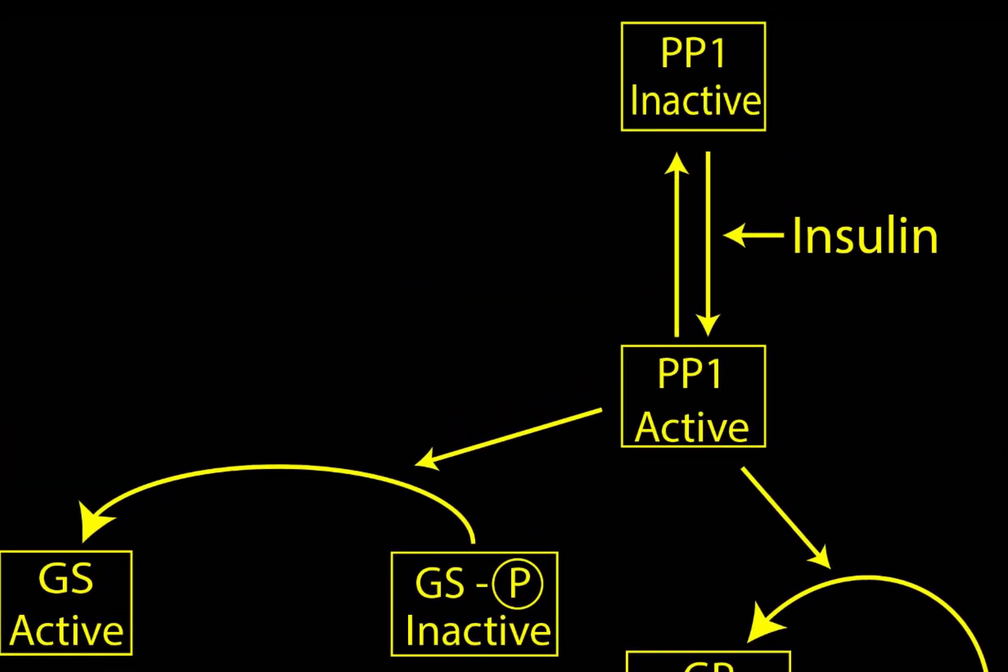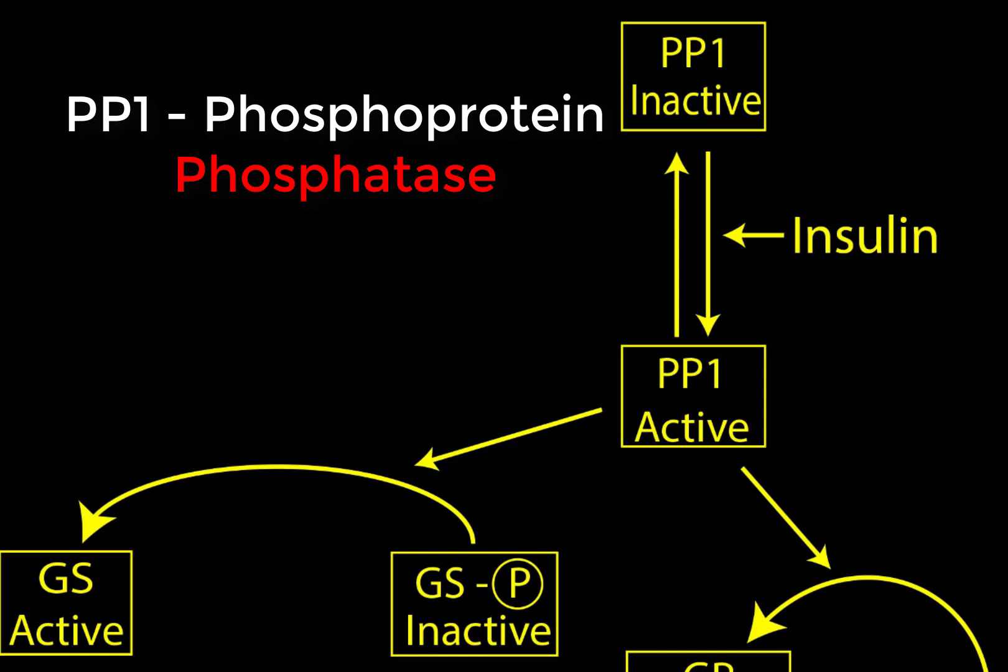First, we see up top we have PP1. So that stands for phosphoprotein phosphatase. This is a phosphatase that can catalyze the hydrolysis of phosphorylated proteins. What we'll note here is it's activated by insulin.